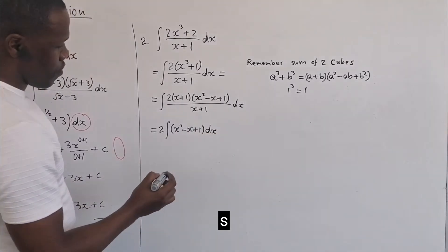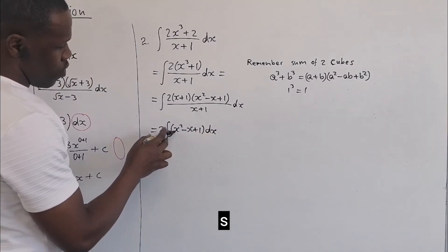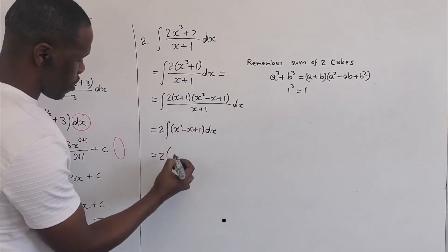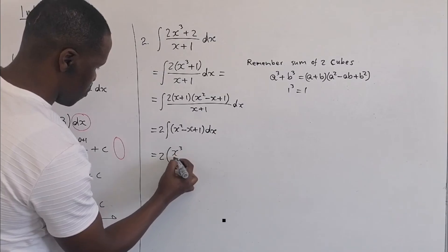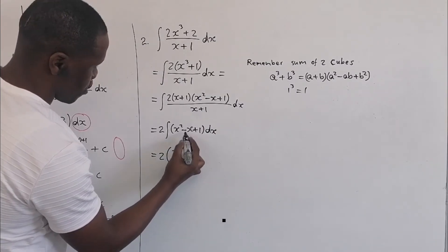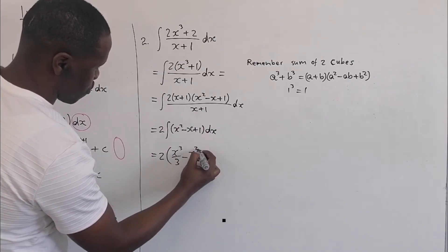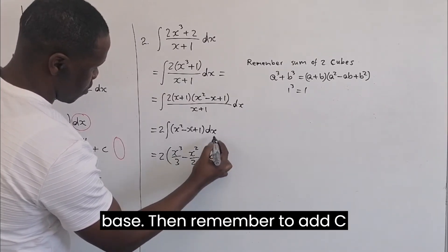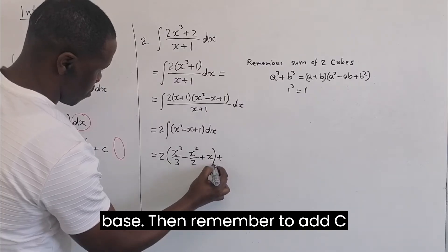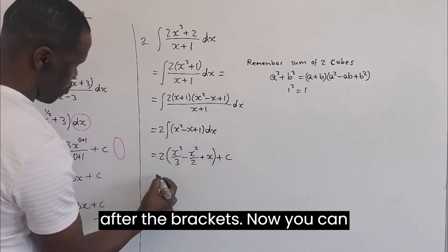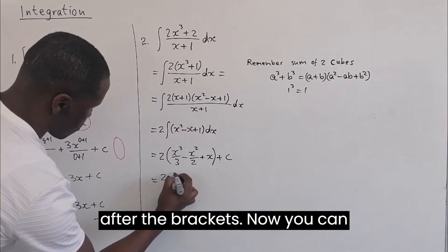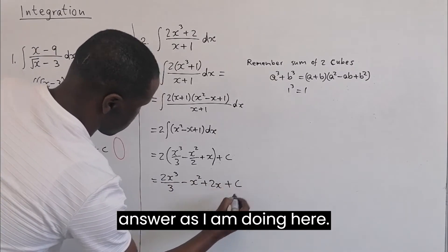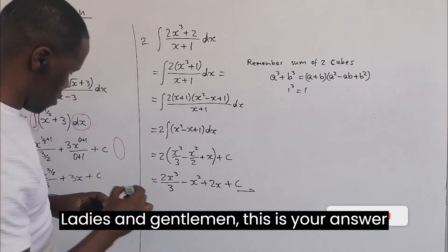After cancelling x plus one, take the two to the other side of the integral sign. The next step is to start integrating the normal way — always add one to the exponent and divide by the new exponent when x is the base. Remember to add c after the brackets, then multiply by two to obtain your final answer.